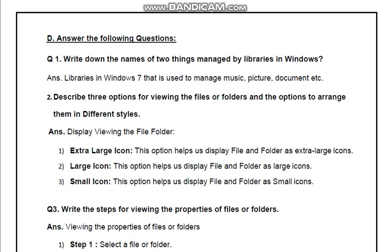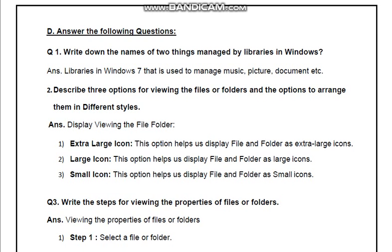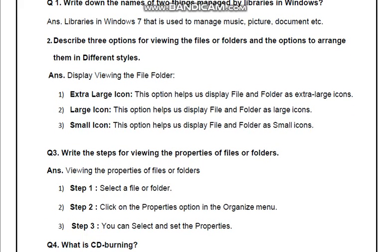Describe three options for viewing files or folders and options to arrange them in different styles. To display files and folders: Extra large icon option helps us display files and folders as extra large icons. Large icon option helps us display files and folders as large icons. Small icon option helps us display files and folders as small icons.